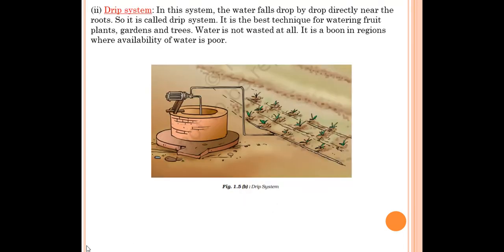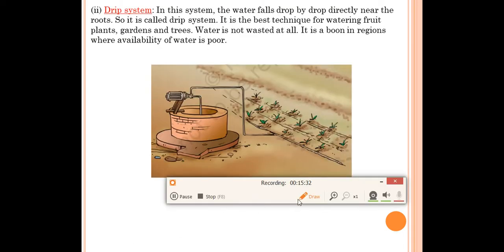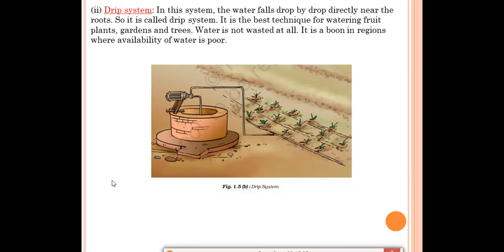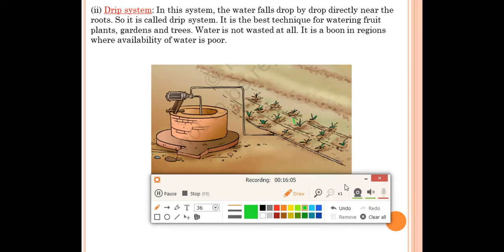The next modern method is drip irrigation. In drip irrigation, water is provided to crops in the form of drops — water falls drop by drop directly near the roots. It is the best technique for watering fruit plants, gardens, and trees. Water is not wasted at all. It is a boon in regions where water availability is poor. Through this system, each plant receives drops of water at the roots.